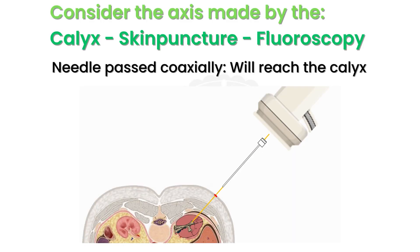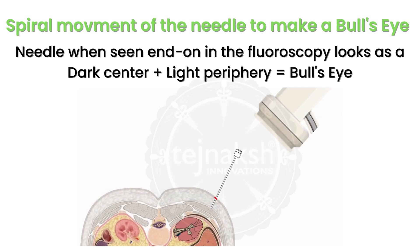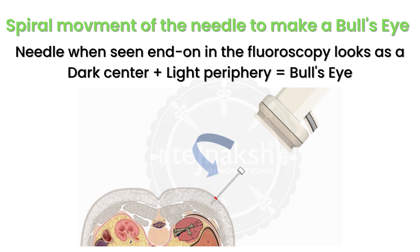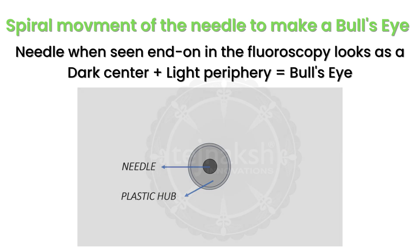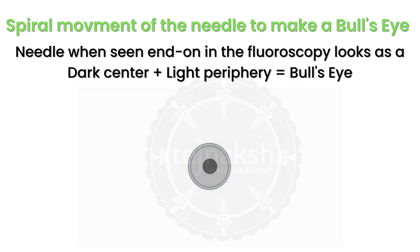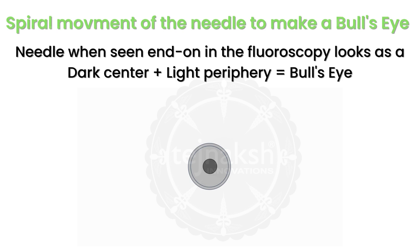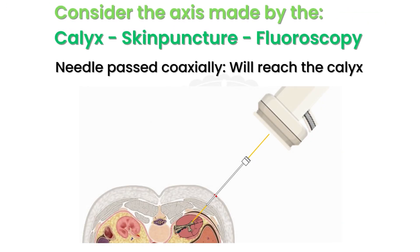Logically, if the needle is passed along the same direction, it will reach the calyx. Insert the initial puncture needle in line with the direction of the C-arm and penetrate the parities. Rotate the initial puncture needle in a spiral fashion under fluoroscopy to turn it into a point. The initial puncture needle now looks like a bullseye, lying in the line connecting the C-arm to the calyx.